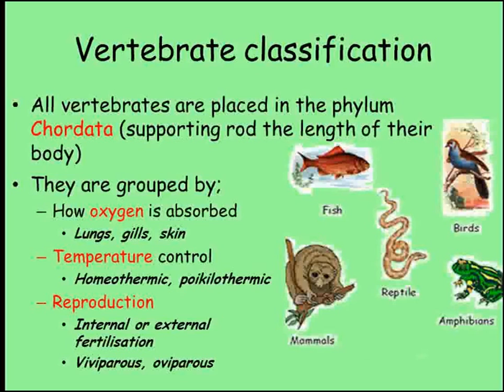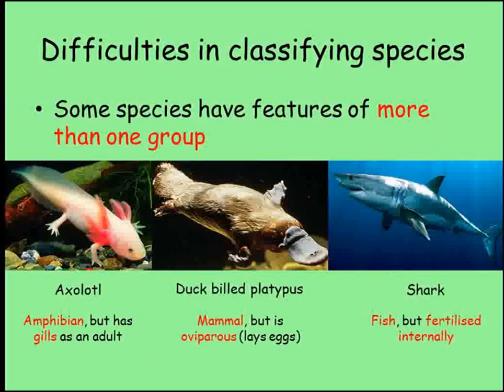Sometimes an animal has properties of more than one group. For example, an axolotl is an amphibian but it has gills even as an adult. A duck-billed platypus lays eggs but has all the other properties of a mammal. And sharks are fish, but they are fertilised internally, and some species of shark even give birth to live young.